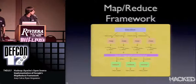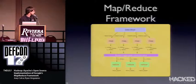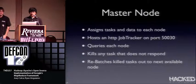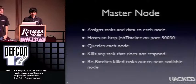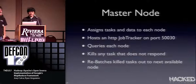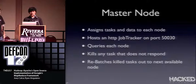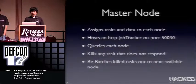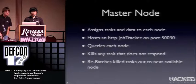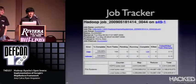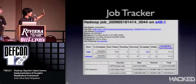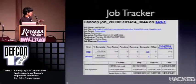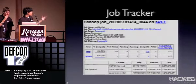Here's what the workflow looks like: you start with your data source, break it up, run a map phase, then bring it all back together. The diagram shows three reducers, but in reality there's only one serial reducer. When you run a job in Hadoop, you upload your job to a master node, which tracks all nodes in the cluster and assigns tasks and data to each. It hosts an HTTP job tracker so you can follow your jobs, watch progress, and view previous jobs. It also queries each node and kills any task that doesn't respond, rebatching that task to the next available node.